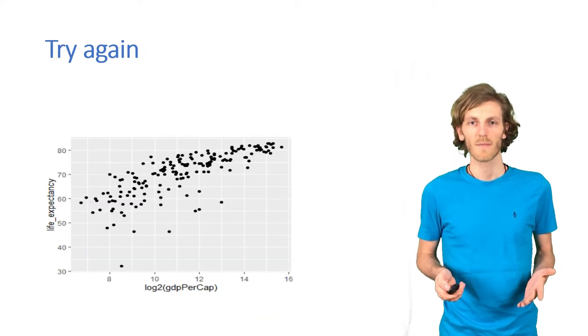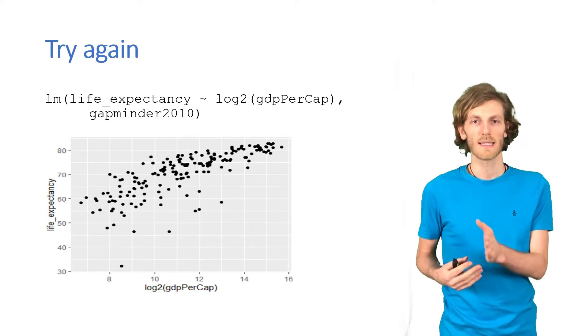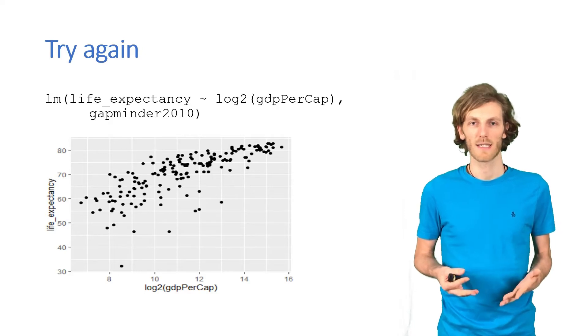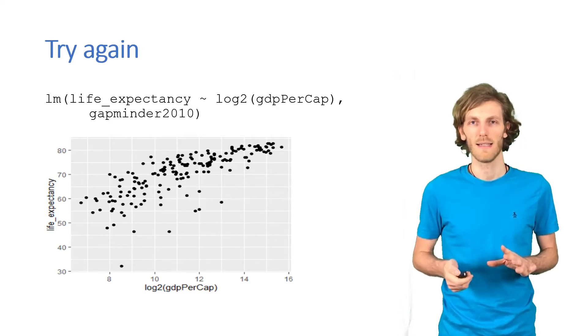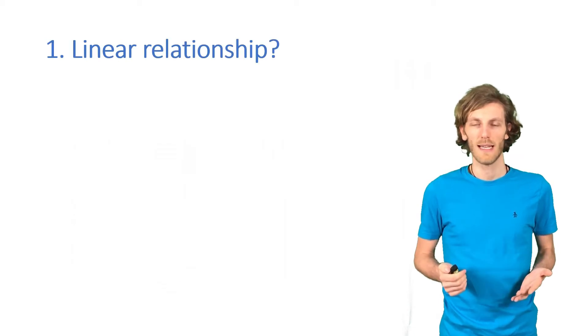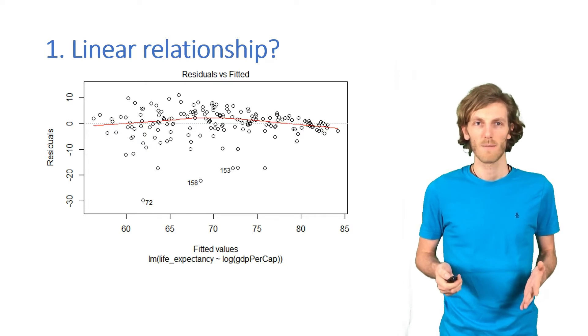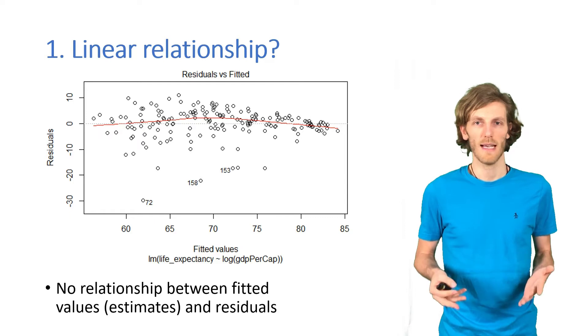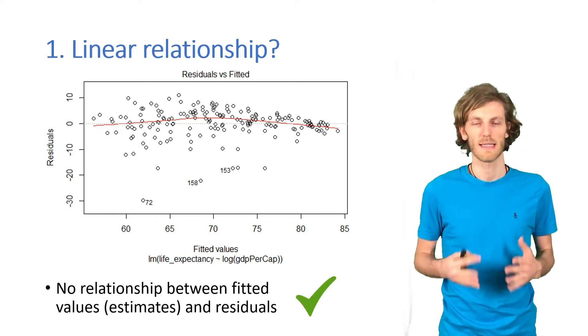Let's try again. Let's use the logarithmic transformation, so that now each step along the x-axis implies a doubling of national income. Remember, with catapult, we see that this looks more like a straight line. So, with regard to a linear relationship, if we look at the new diagnostic plots, this time we are fine. There is no relationship between the fitted values and the residuals, so this assumption of a linear model is met.